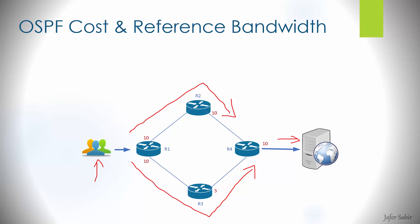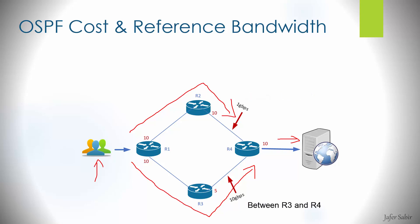With OSPF the routers take the shortest path, and that's where the name comes from: Open Shortest Path First. Why would the router prefer R3 over R2? This is to do with the speed of the link. Between router R1 and R2 it may be a 1GB link, whereas the link between R1 and R3 is a 10GB link, so it's half the cost. The cost is reduced based on the link speed.